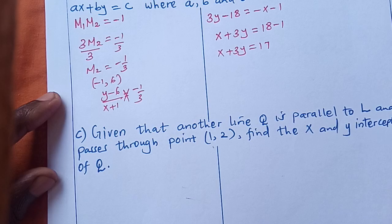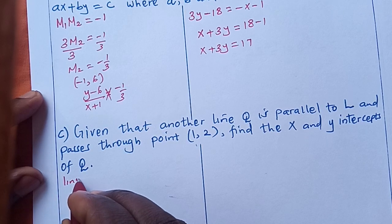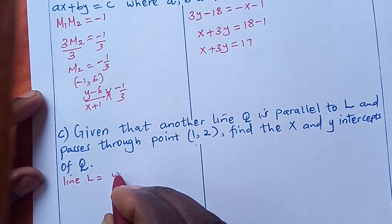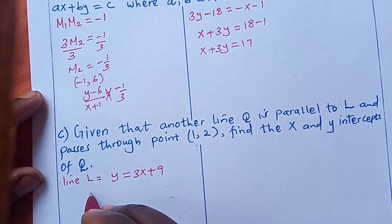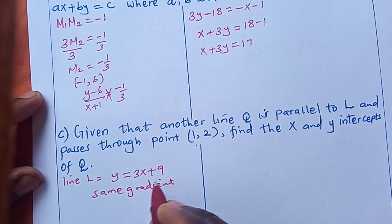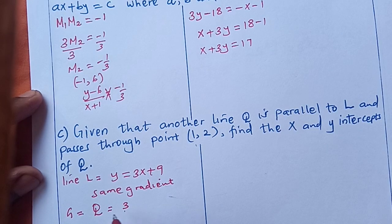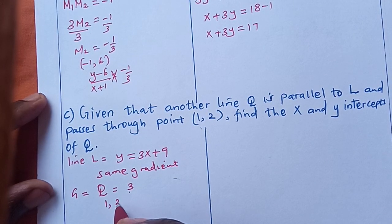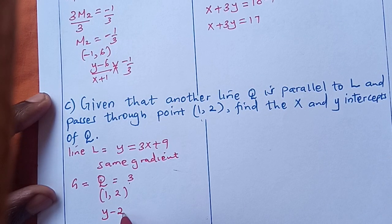Given that another line Q is parallel to L. The equation for line L was y = 3x + 9. Parallel lines have the same gradient, so the gradient of Q is also 3. Now, using the point (1, 2) and gradient 3, the equation will be (y - 2) / (x - 1) = 3/1.